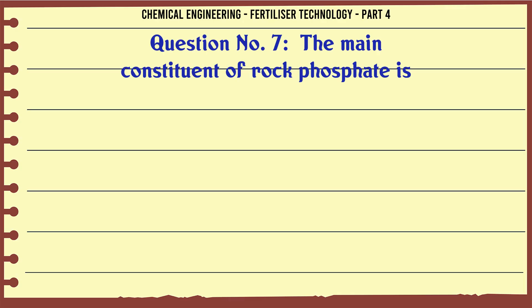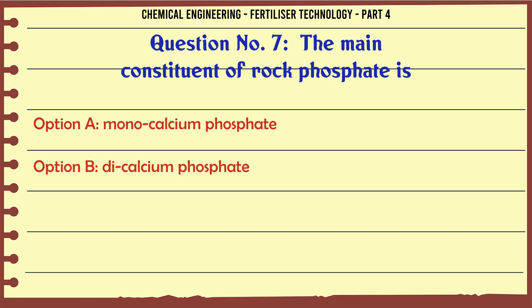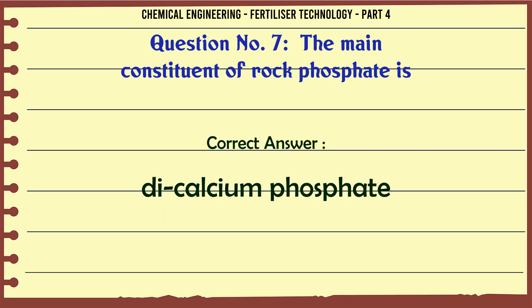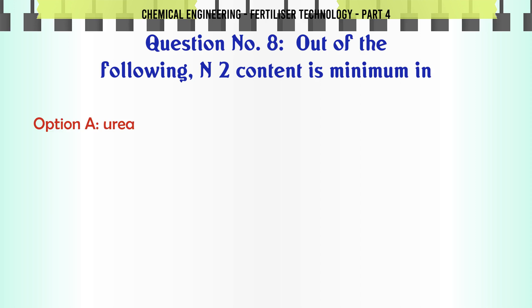The main constituent of rock phosphate is: a. monocalcium phosphate, b. calcium phosphate, c. fluorspar, d. none of these. The correct answer is: calcium phosphate.